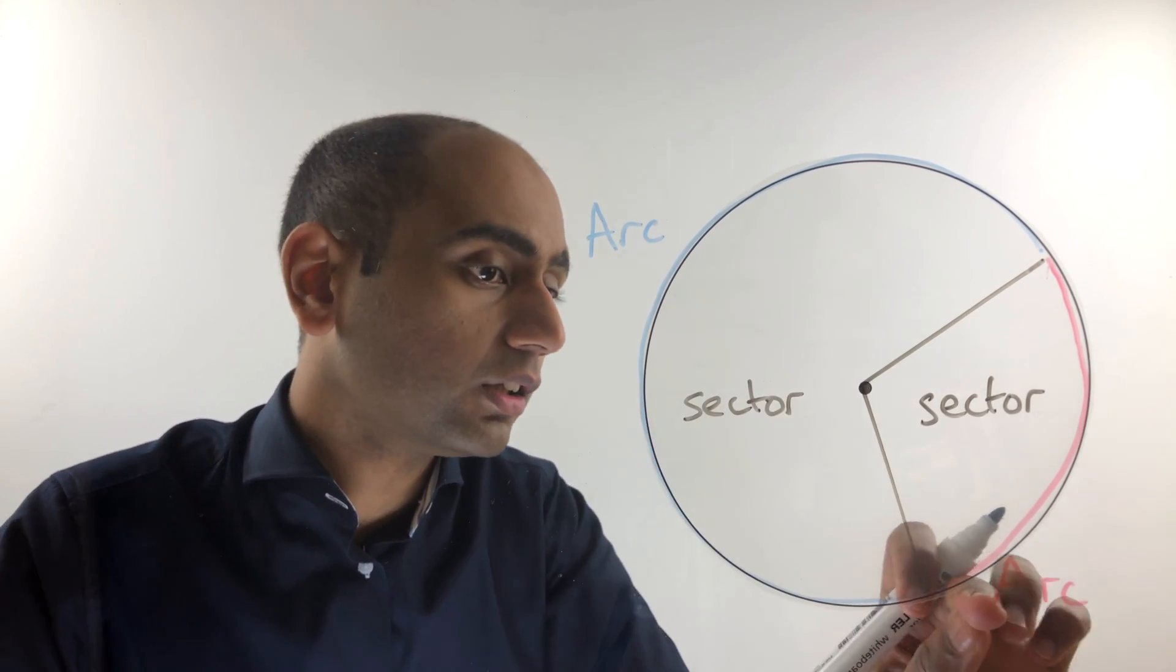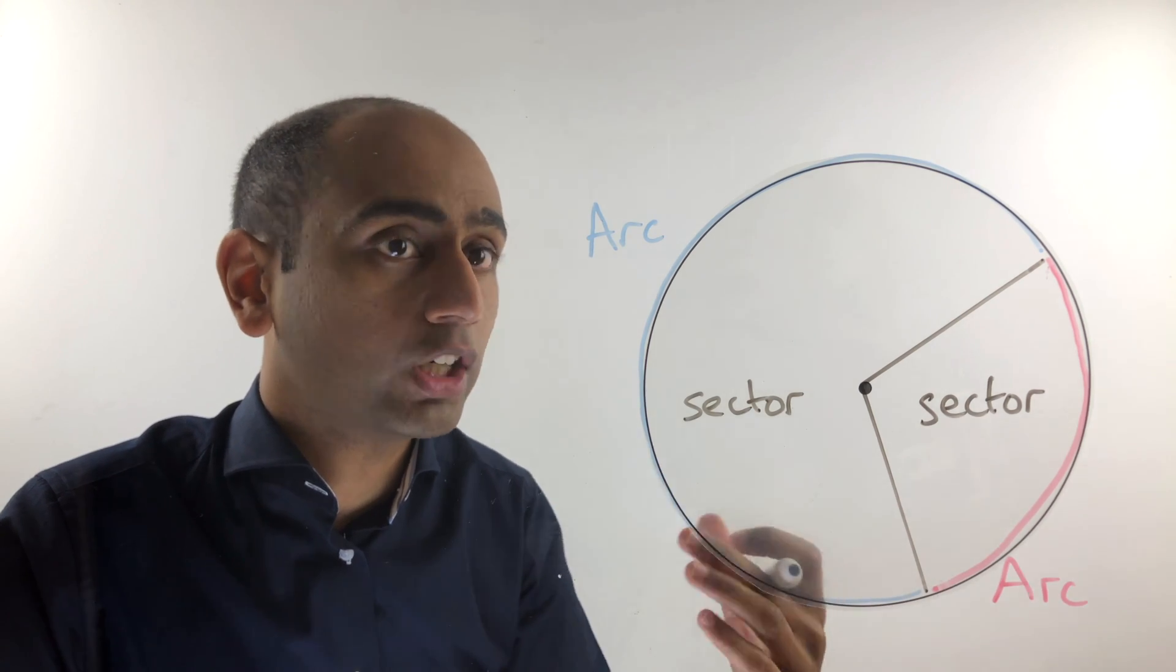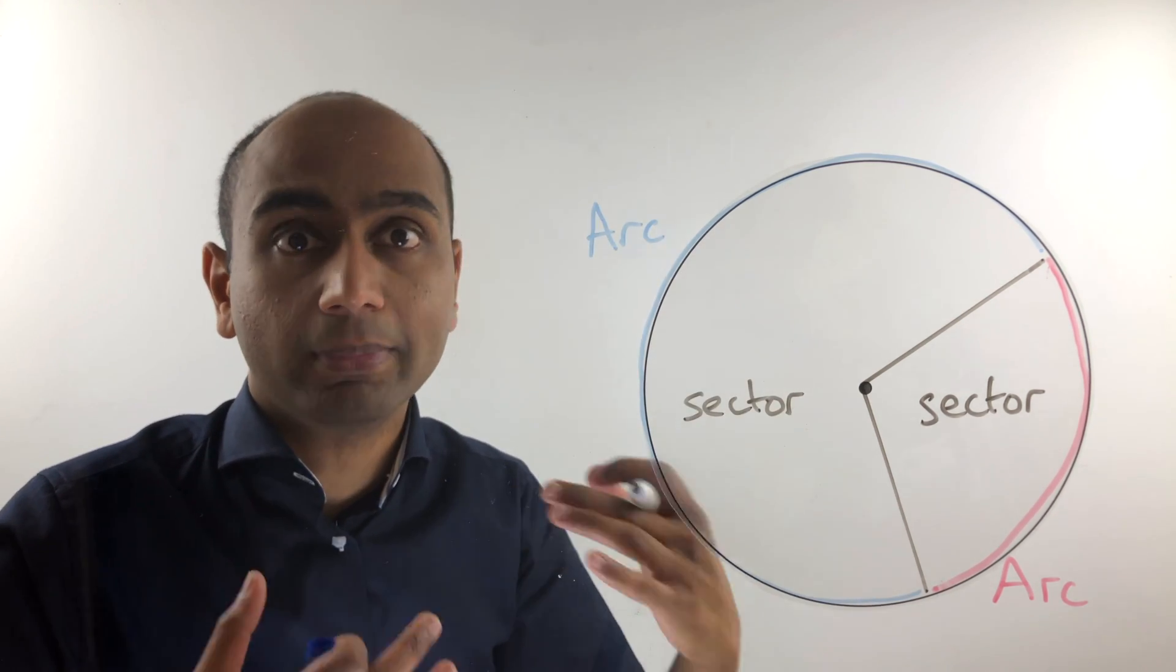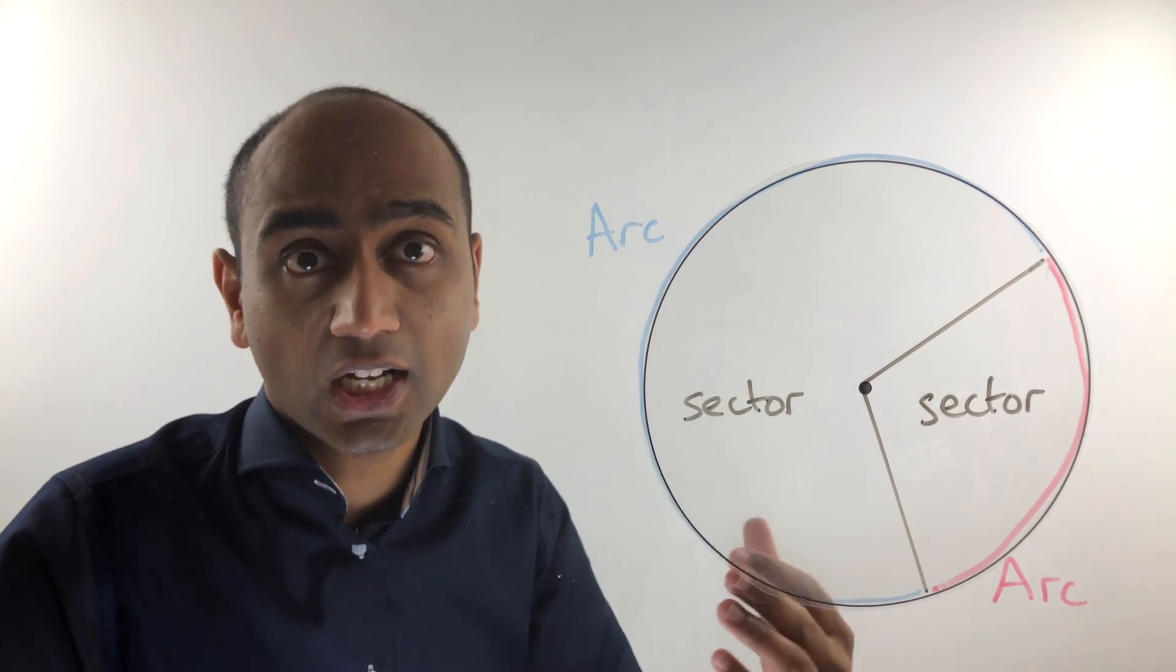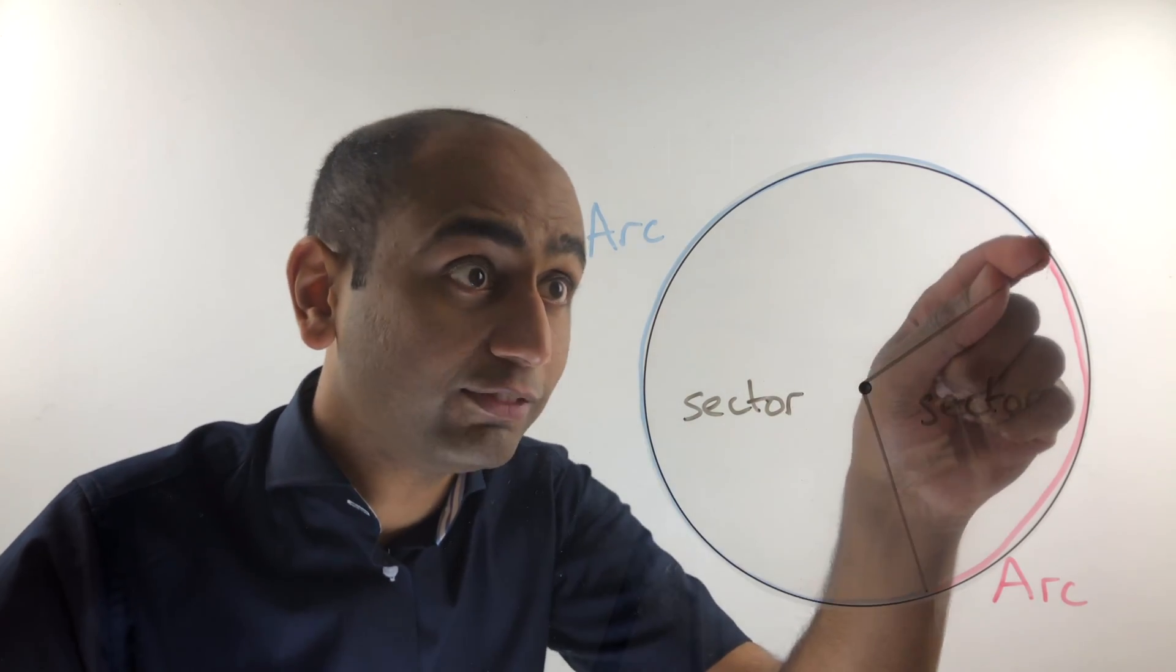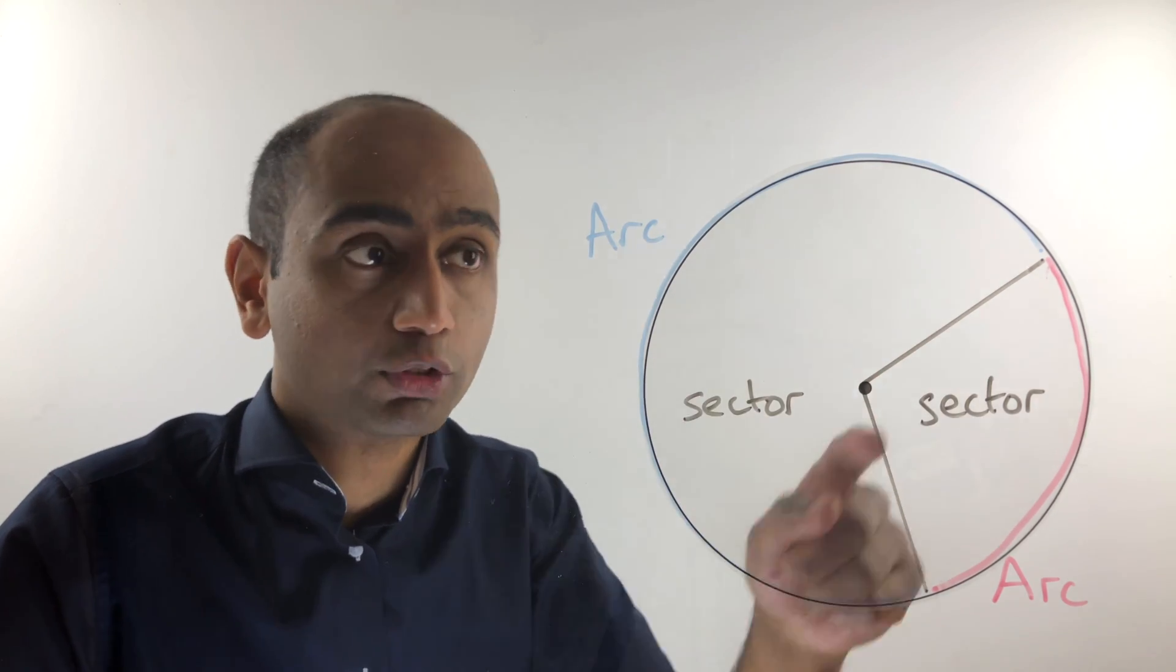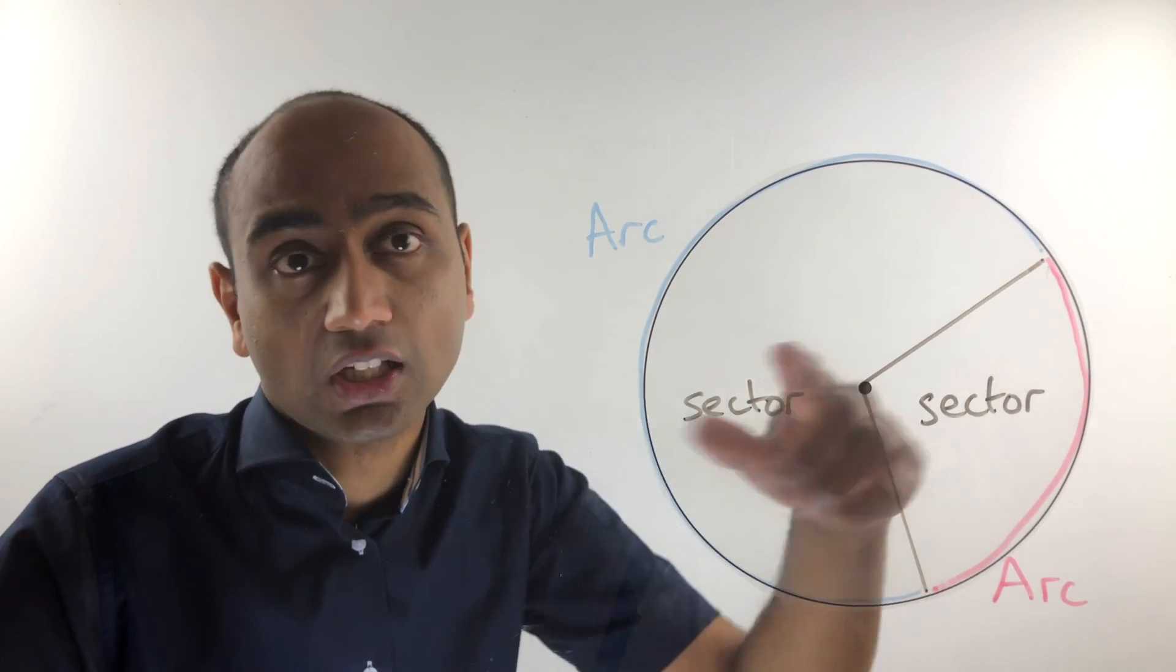Just like we call this the minor sector and this one the major sector, this red one would be the minor arc and this blue one would be the major arc. And as I've said, an arc is simply part of the circumference, so even this major arc is only part of the circumference. It's not a full circle.